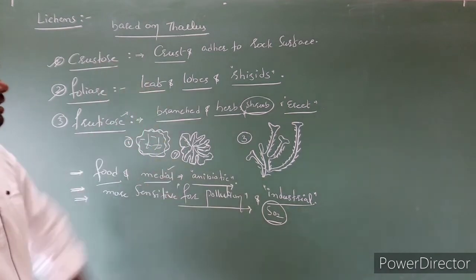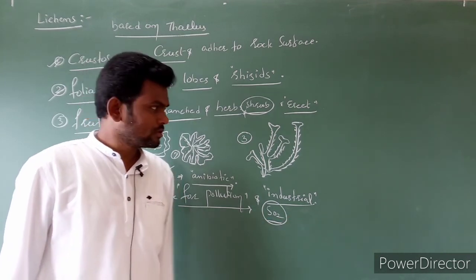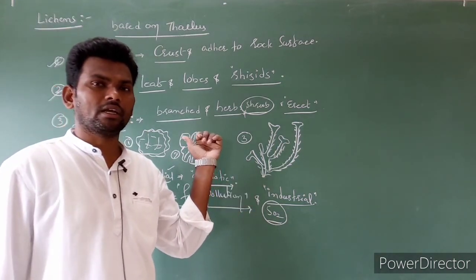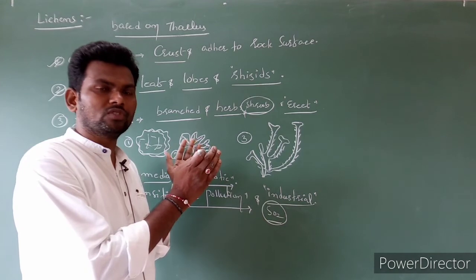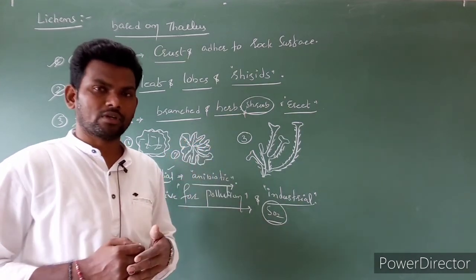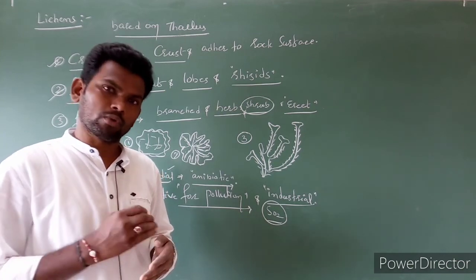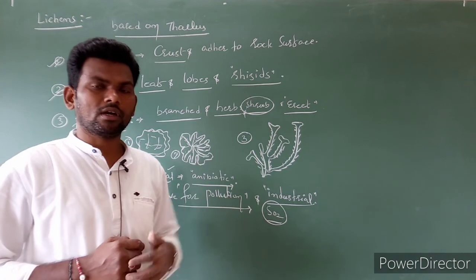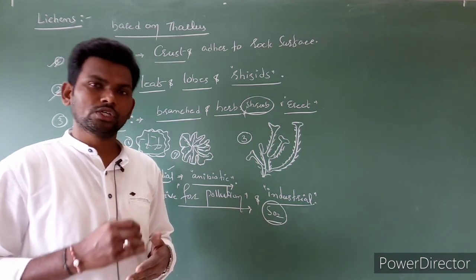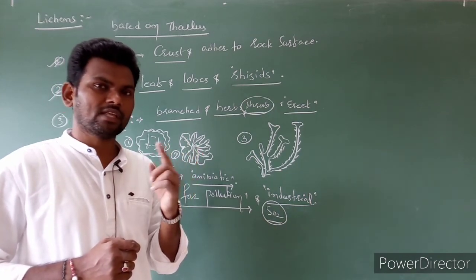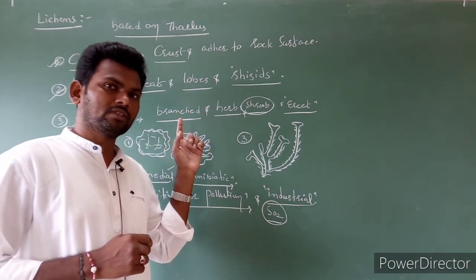This is the last topic of the second chapter. From the beginning in second chapter we discussed Archaebacteria, Eubacteria, Cyanobacteria — complete Monera kingdom general characters. Then we entered Protista: Chrysophytes, Dinoflagellates, Euglenoids, Slime molds, Protozoans. Then Fungi kingdom: Phycomycetes, Ascomycetes, Basidiomycetes, Deuteromycetes. Plantae kingdom and Animalia kingdom will be discussed in the third and fourth chapters.